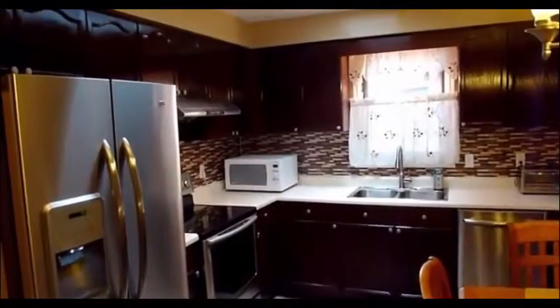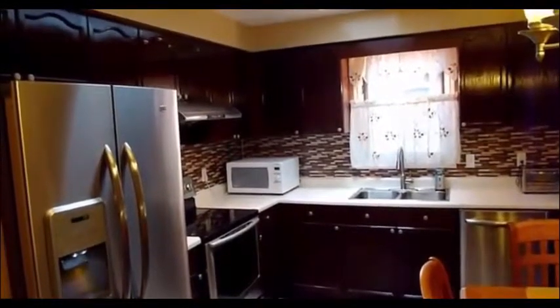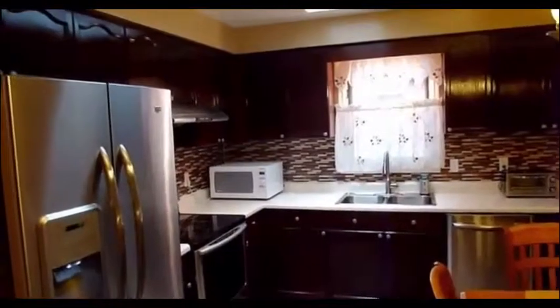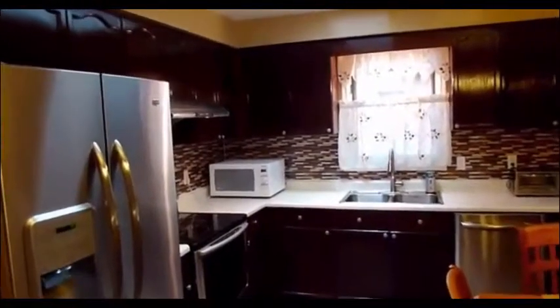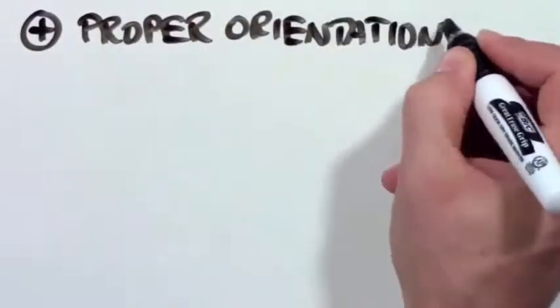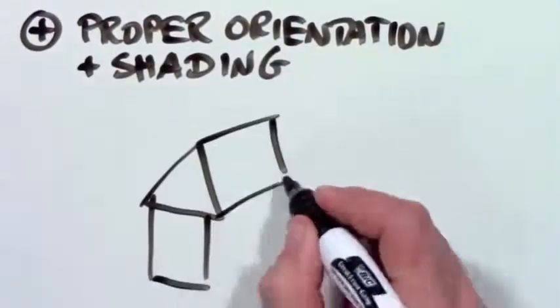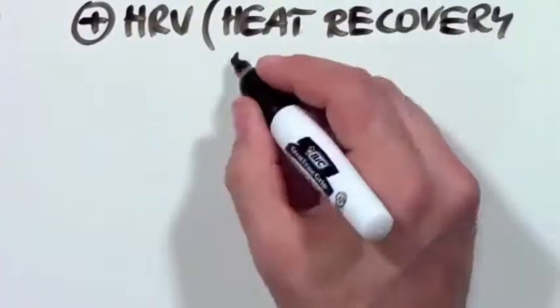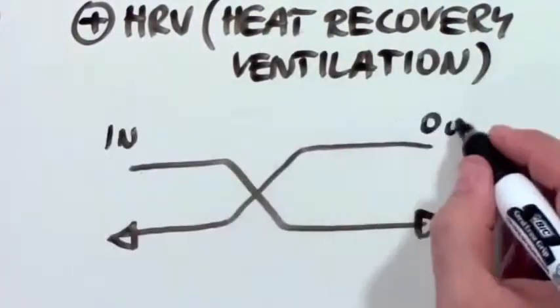An example of a whole systems approach is passive housing. A passive house is a building in which a comfortable interior climate can be maintained without active heating and cooling. This approach is achieved through a combination of options. For example, passive solar design through the orientation of the house in relation to the sun and minimal surface area, and advanced technology using heat recovery ventilation.